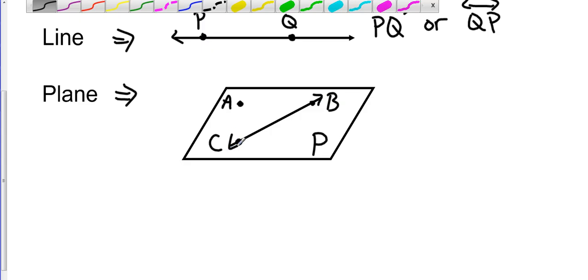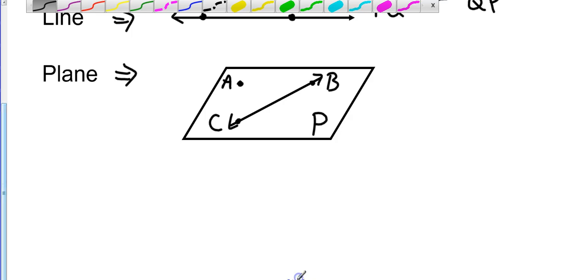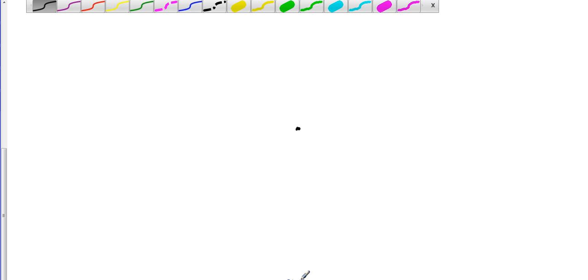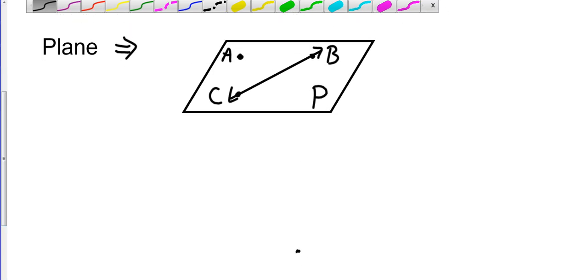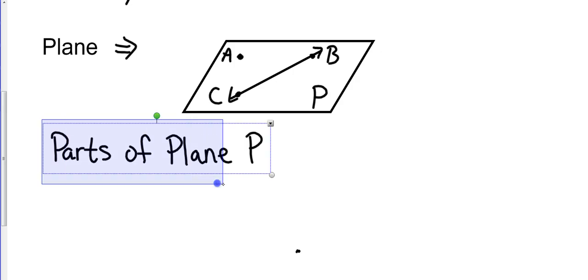You could have lines that are on here. And so they might ask you to identify the things that were on this plane. So let's do that. Let's identify the parts of this plane or the components. I'm going to call it plane P.